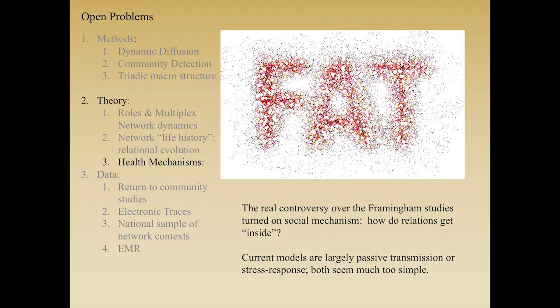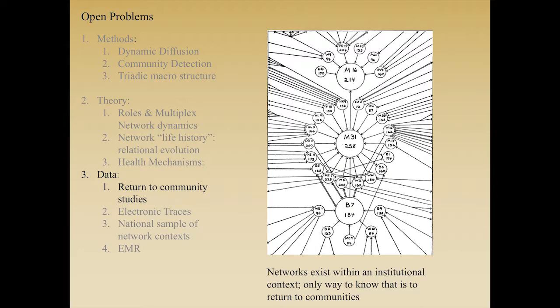We need to understand more clearly what the health mechanism is — what is it that gets a social relation under the skin? The fight over the Christakis paper was just this: the hard part was the set of mechanisms we have in hand to distinguish why my friends might make me fat. They're not putting food in my face, they're not stopping me from exercise — is it information, is it selection? Our understanding of what the actual mechanism is we've yet to fully flesh out. Nick Christakis in his Annual Review piece outlines six different mechanisms: selection, information, peer pressure, these types of things. I suspect there's a lot more going on there, else the social support literature wouldn't be nearly as robust as it is.